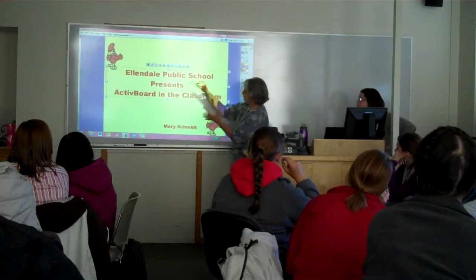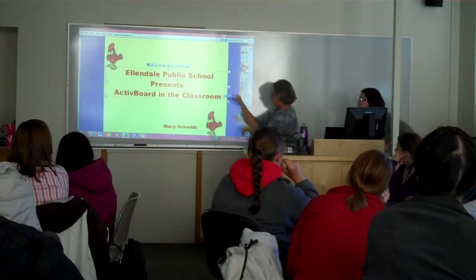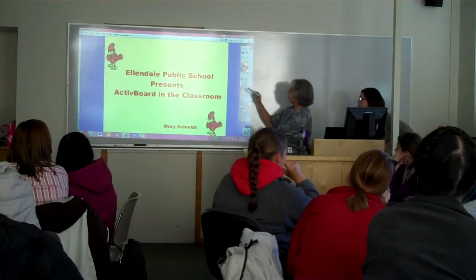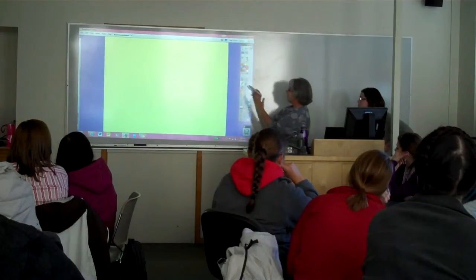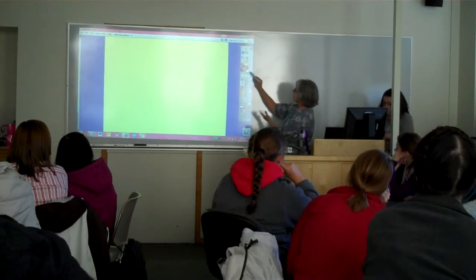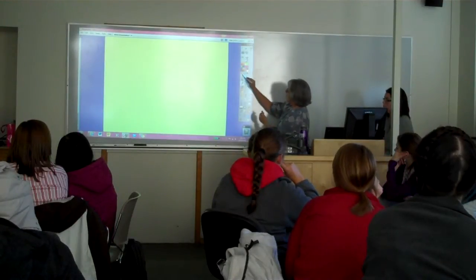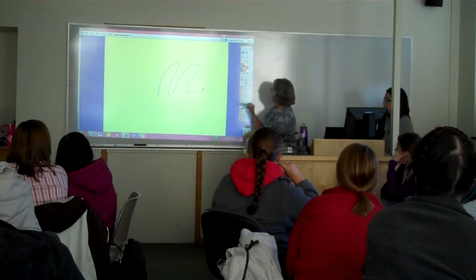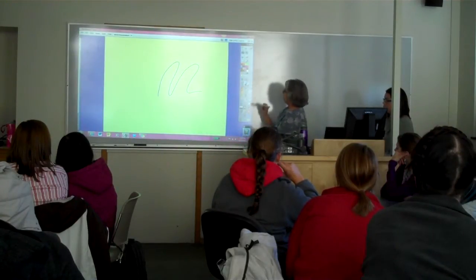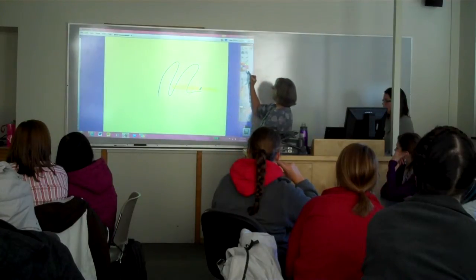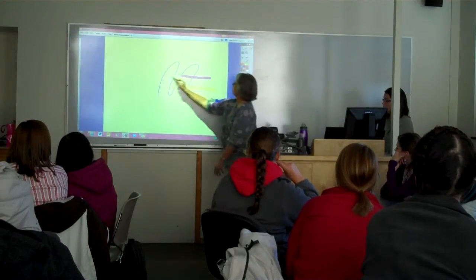You can also make objects bigger or smaller by clicking on them. This right here is the pen. When you hover over it, it tells you what it is. Here you have select colors up here, and then you can write. The highlighter is right here — that highlights things, and you can change the colors by clicking up here.